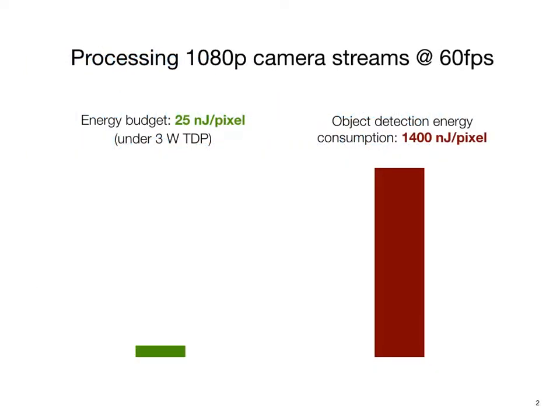Running computer vision tasks on mobile devices in real time consumes a lot of energy. For instance, detecting objects from 10 NDP camera streams at 60fps requires an energy budget that's two orders of magnitude higher than what a typical mobile device offers.